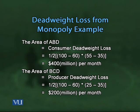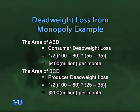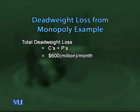Similarly, the producer's dead weight loss is given by the area of triangle BCD = 1/2 × (100 − 60) × (35 − 25) = 1/2 × 40 × 10 = $200 million per month. The total dead weight loss is the consumer's loss plus the producer's loss: $400 million + $200 million = $600 million per month.